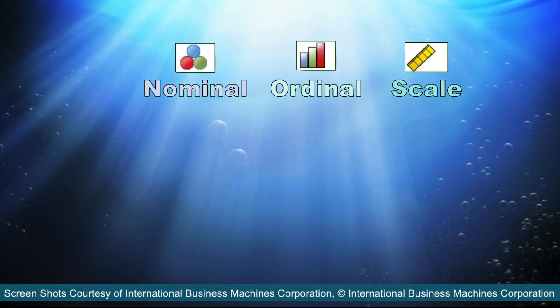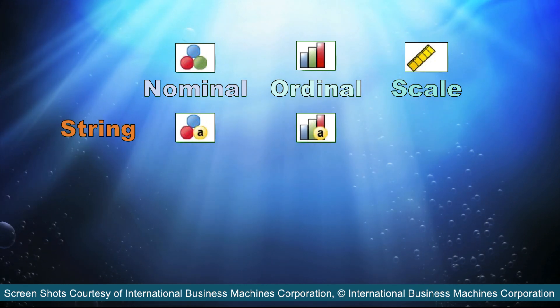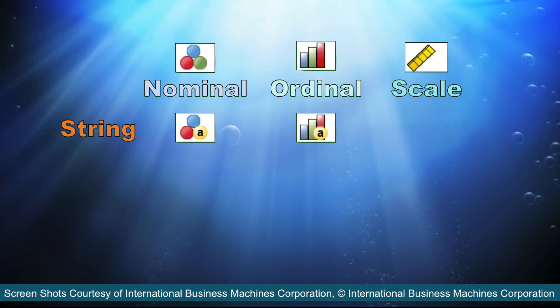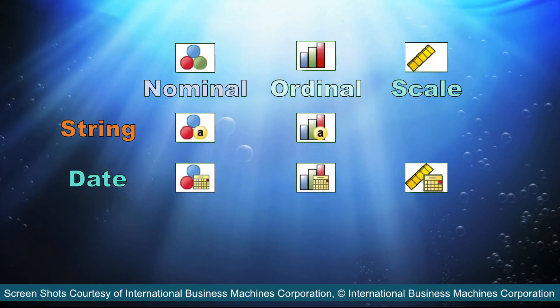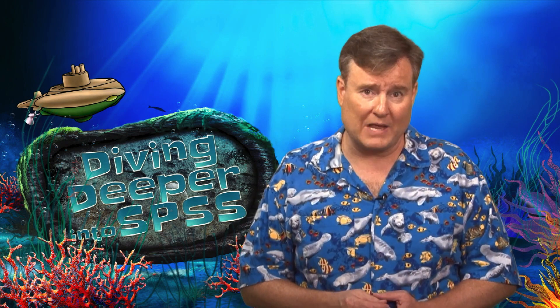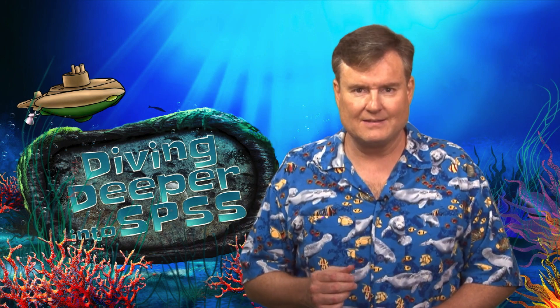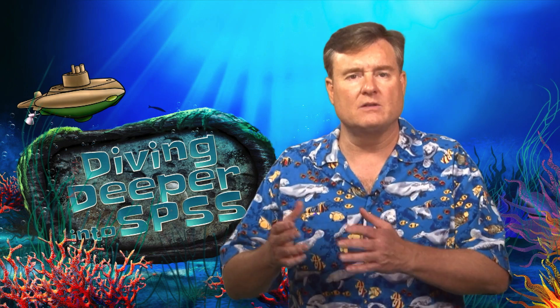You may not be familiar with less commonly used icons, such as the small 'a' in a circle to indicate a string variable for either ordered or unordered categories. If you have set your variable to be a date, you will see a calendar icon, and if you are using a time measure, you will see a clock. To simplify this complexity, begin by asking whether a variable is creating a category or measuring something. Nominal and ordinal data create categories; scale data measure something.